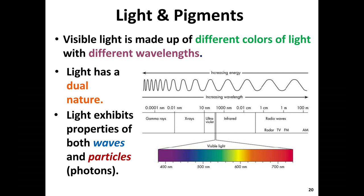A second property of light is that it has a dual nature — it has properties of both waves and particles. For the sake of photosynthesis, what you really should know is that light comes from the sun in the form of a photon, and it's through that photon that we are exciting molecules in plants to power the reactions of photosynthesis. We're going to focus on the particle nature of light, so anytime we refer to a photon, that's the particle aspect of light.